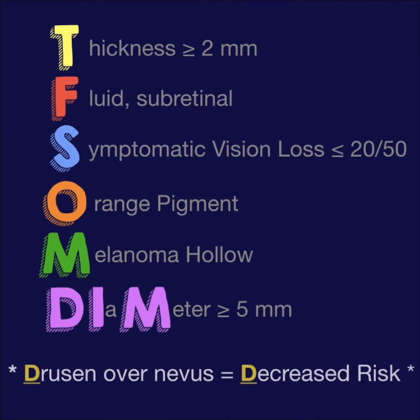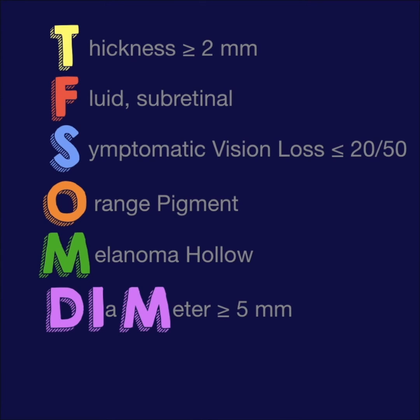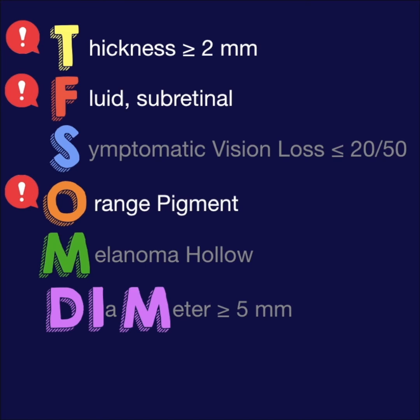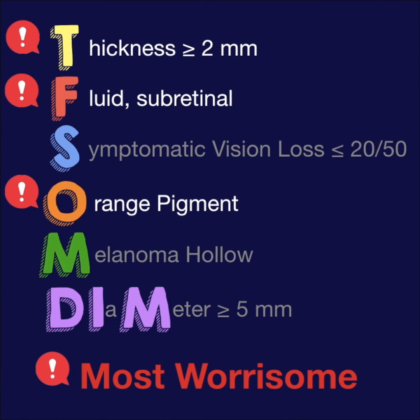Keep in mind that drusen overlying the nevus is a sign of chronicity, suggesting a decreased risk of malignant transformation. A more recent paper showed that certain risk factors — thickness, fluid, and orange pigment — are the most worrisome, and a combination of these should warrant extremely close monitoring or even treatment.